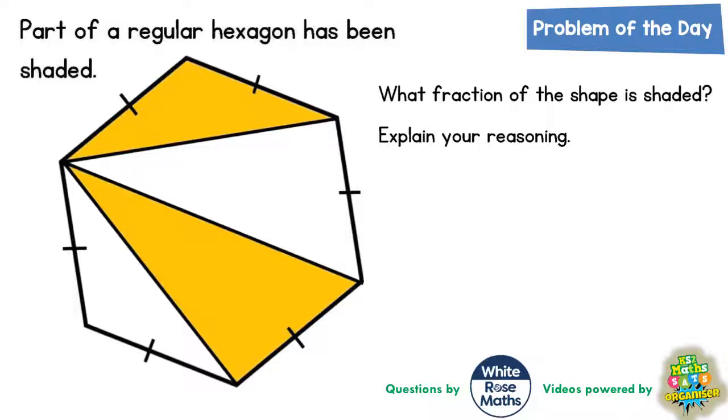So we're dealing with a hexagon, part of a regular hexagon. We know it's regular because we've got these dashes around the outside, these little marks on each edge of the hexagon, and what that means is that all the sides are the same. So if all the sides are the same and all the angles are the same, then that's why it's called a regular shape.